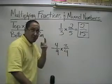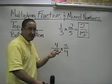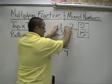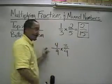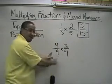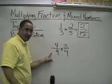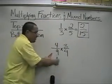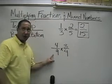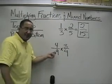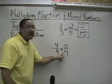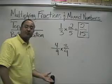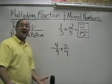Always remember, you have to pay attention to your integers. That problem was positive times positive, so our answer is positive. Now let's take a look at this next set of fractions. This is negative 4 ninths times positive 3 fourths. It's a negative times a positive, which means our answer is going to be negative.